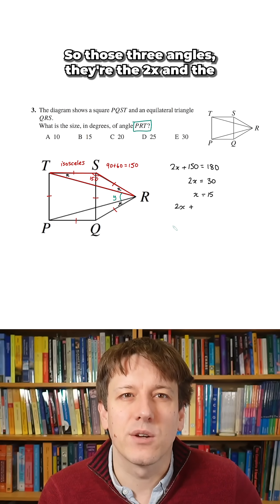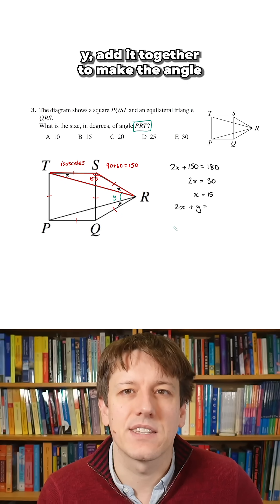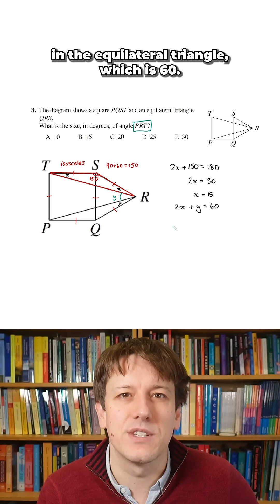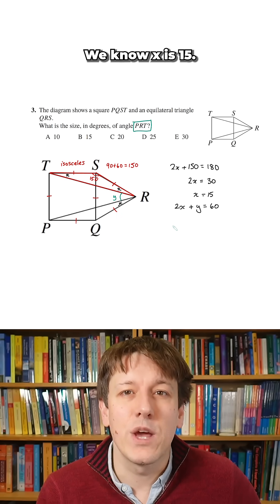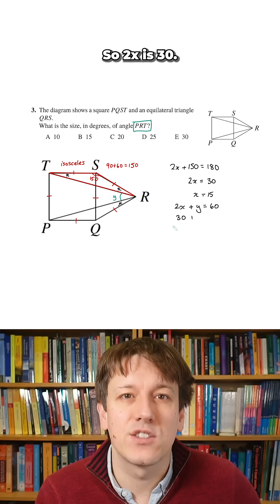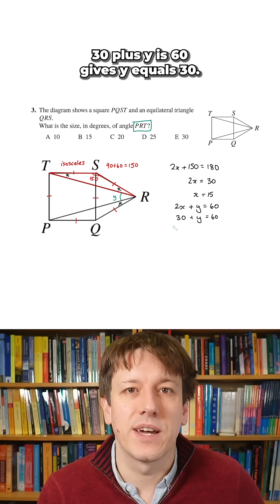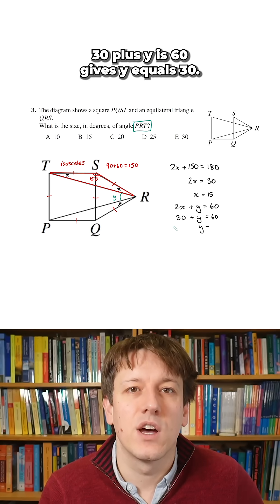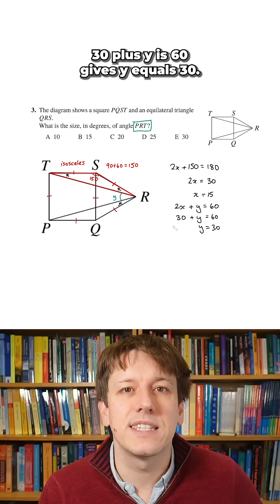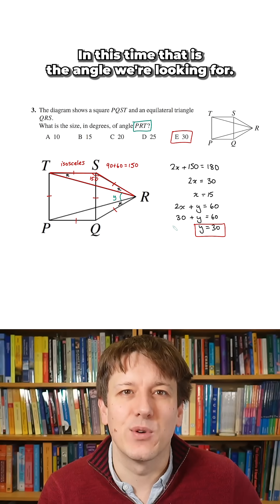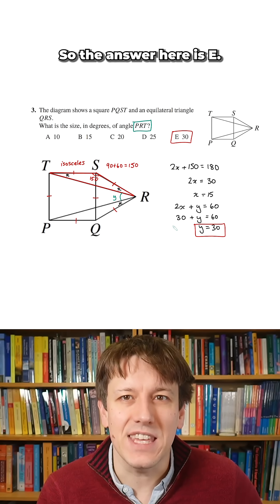So those three angles — the two Xs and the Y — add together to make the angle in the equilateral triangle, which is 60. We know X is 15, so 2X is 30. Then 30 plus Y equals 60 gives Y equals 30. And this time, that is the angle we're looking for. So the answer is E.